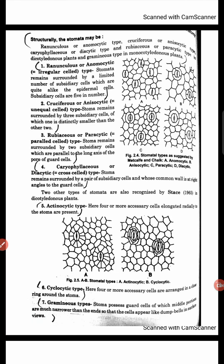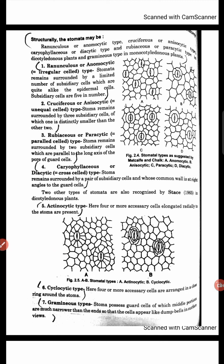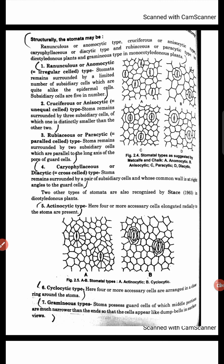Now we will talk about stomata classification based on structure. There are seven types. Let's discuss. First type: Ranunculaceous or Anomocytic. In this type, stomata are surrounded by a limited number of subsidiary cells which are the same as the epidermal cells. The subsidiary cells are five in number.